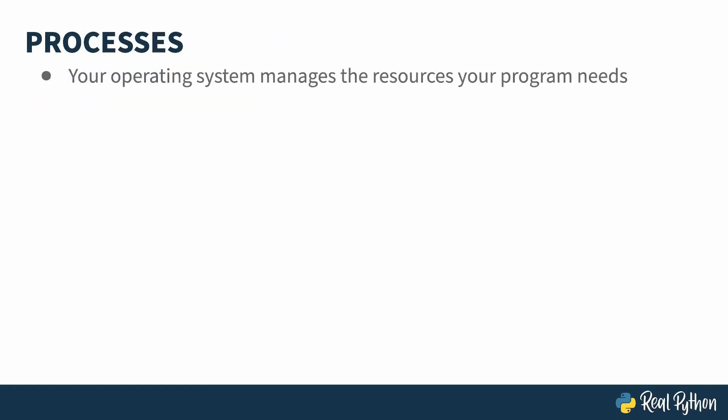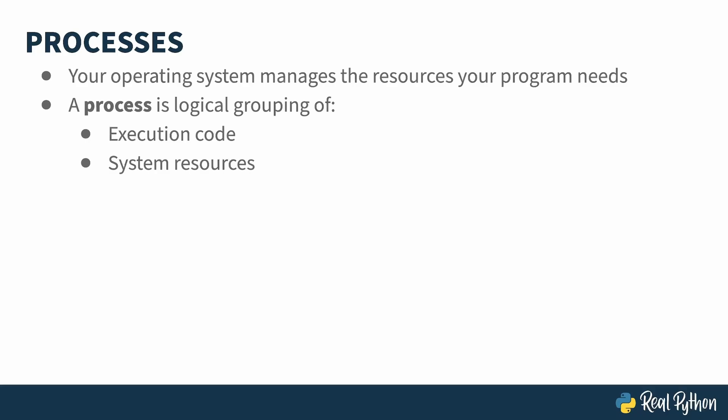When you run a program, your operating system is in charge of managing when it runs and what resources on your machine it can use at any given time. Your OS does this by managing a process, which is a grouping of code and resources. In olden times, a program was the only kind of process, and even nowadays, programs that don't use concurrency mechanisms are still single-process entities.